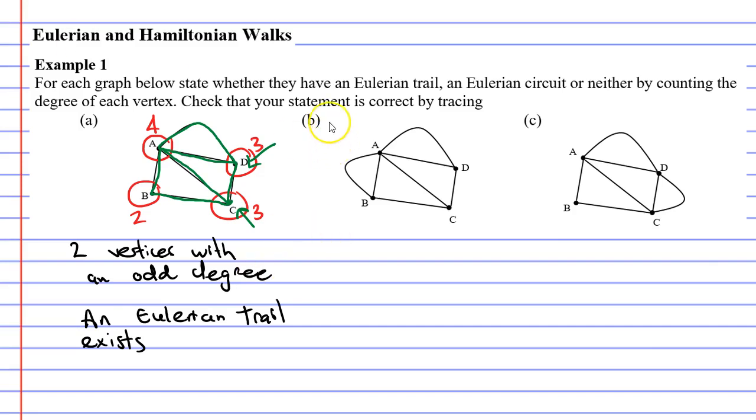Okay, let's move on to question B now. Checking the degree of each vertex, we have one, two, three, four, five edges here. We have three edges here, three edges here, and three edges at point B.